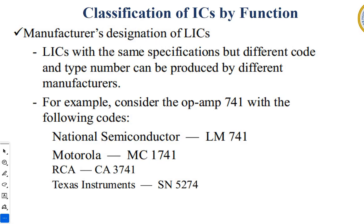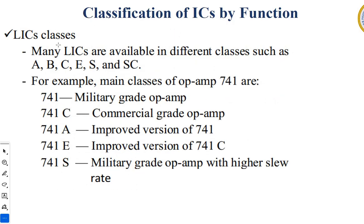ICs are also classified by their function. LICs with the same specifications built by different manufacturers will have their own different names. For example, the op-amp 741 is named by National Semiconductors as LM741; by Motorola it is called MC1741; by RCA it is CA3741; and by Texas Instruments it is called SN5274. LIC has many classes such as A, B, C, E, S, and SC.